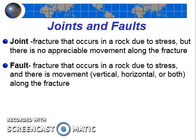Cracks in rocks are called joints. If there is movement along the crack, it's called a fault. A joint is a fracture that occurs in a rock due to stress, but there is no appreciable movement along the fracture. In contrast, a fault is a fracture that occurs in a rock due to stress, but there is movement — vertical movement, horizontal movement, or both types of movement along the fracture.